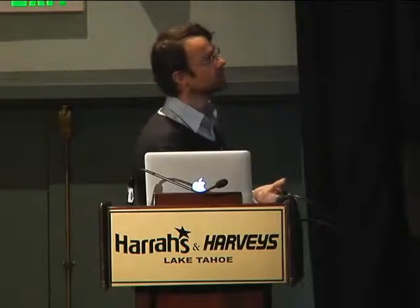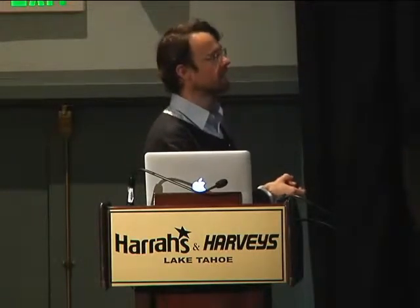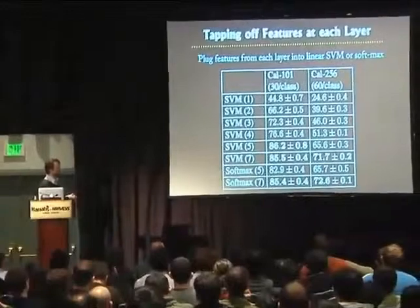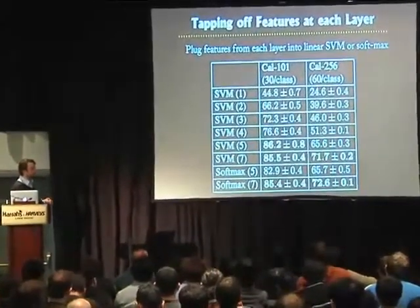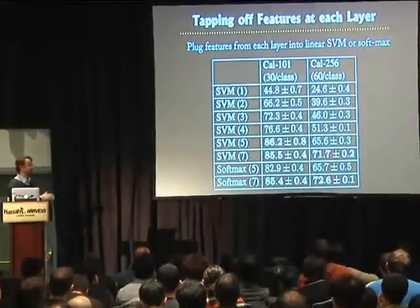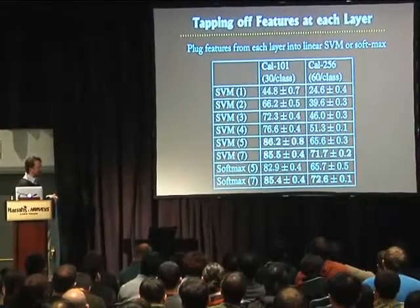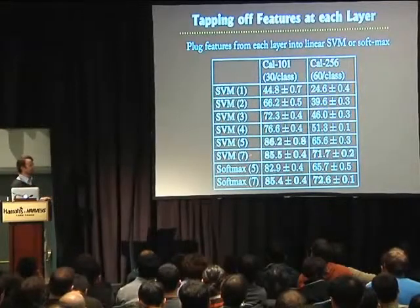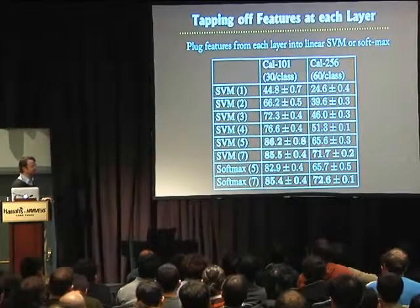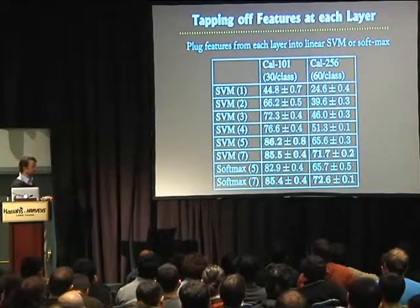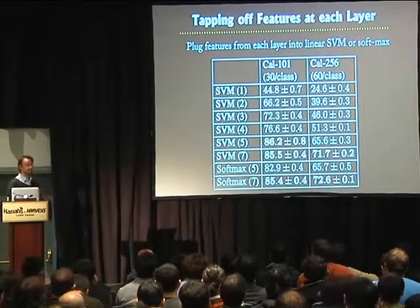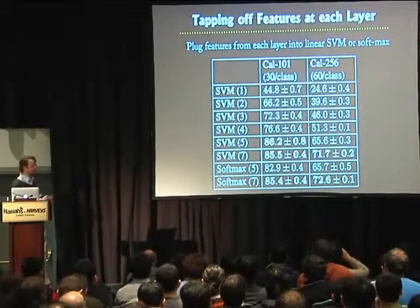Another piece of evidence for depth: we trained an ImageNet model, chopped off the softmax (designed for 1000 ImageNet classes), and retrained it on Caltech-101 or 256. We then tapped off features from each layer — layers 1 through 7 — threw those features into a linear SVM, and measured performance on Caltech. We see a very nice monotonic gain in performance going from the first to the seventh layer. Each successive layer in the model gives quite a substantial improvement, strongly suggesting that depth of representation is important.